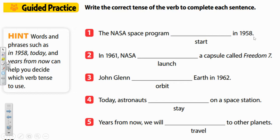So this is in the past. How do we take the verb start and put it in the past tense? Add that -ed to the end: started. The NASA space program started in 1958.